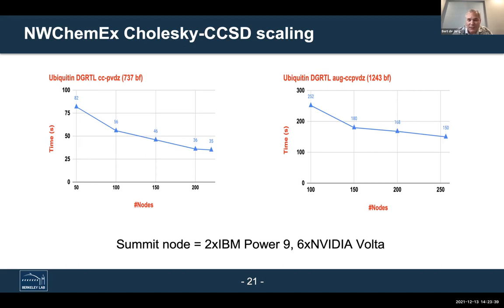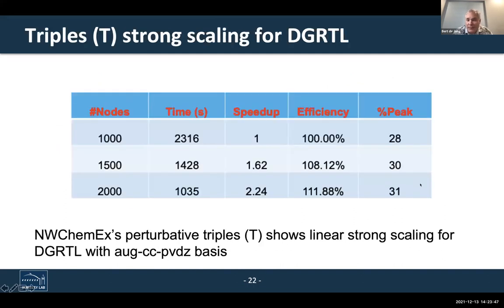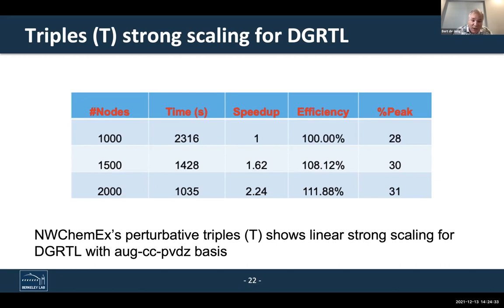The perturbative triples are relatively easier to scale because they are effectively a large number of dense tensor algebra operations — BLAS-3 operations — which GPUs are very good at. For a smaller fragment with about 1,200 basis functions, we've been able to run on a large number of nodes and get nearly linear scaling. We only get about 30% of peak performance, but it is still scaling, which is a good sign for our performance metrics.